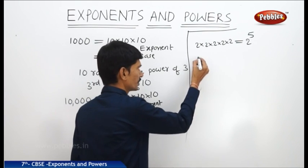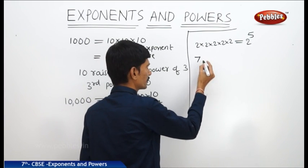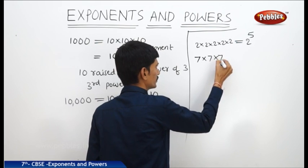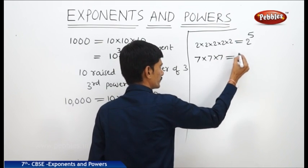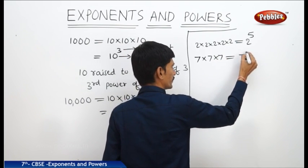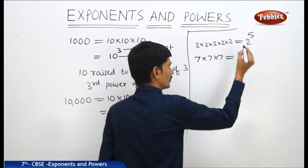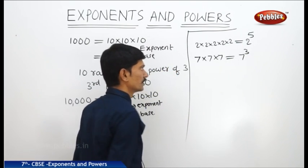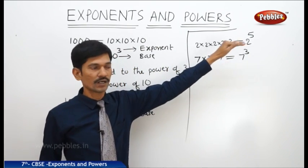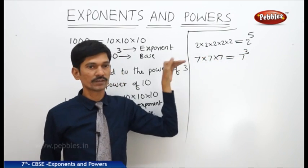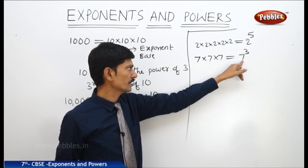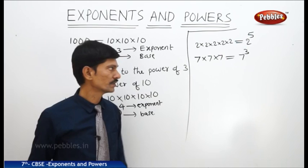For example, if 7 is multiplied 3 times — 7 × 7 × 7 — this equals 7 to the power of 3. This is read as '7 raised to the power of 3' or the '3rd power of 7.' Here also, 7 is the base and 3 is the exponent.